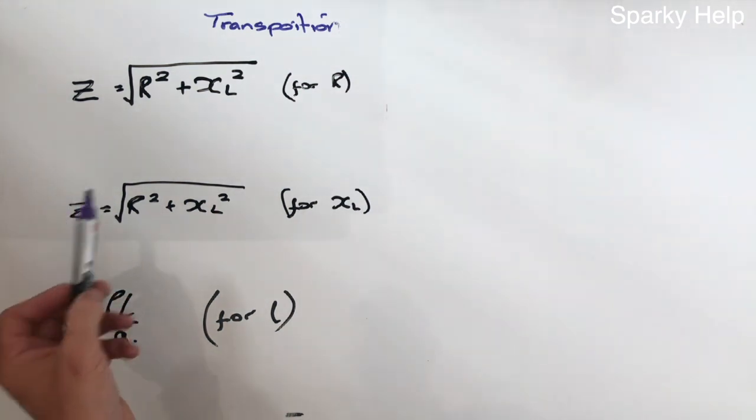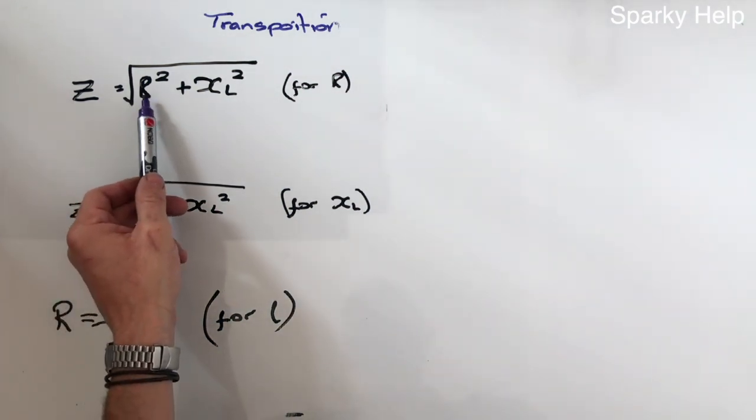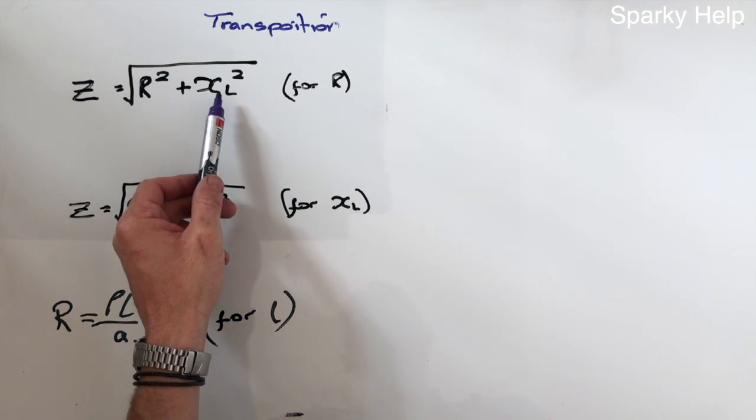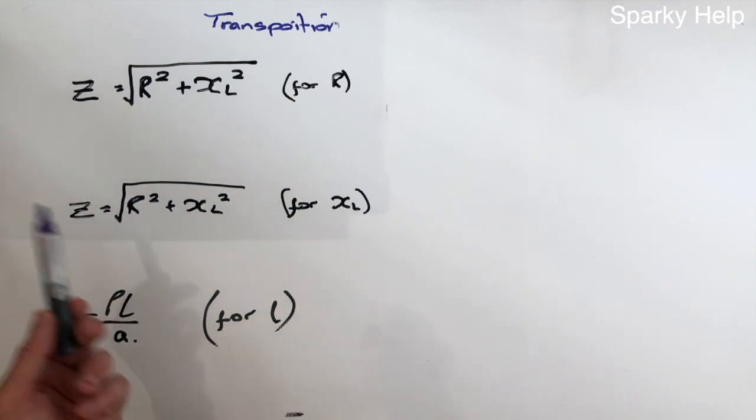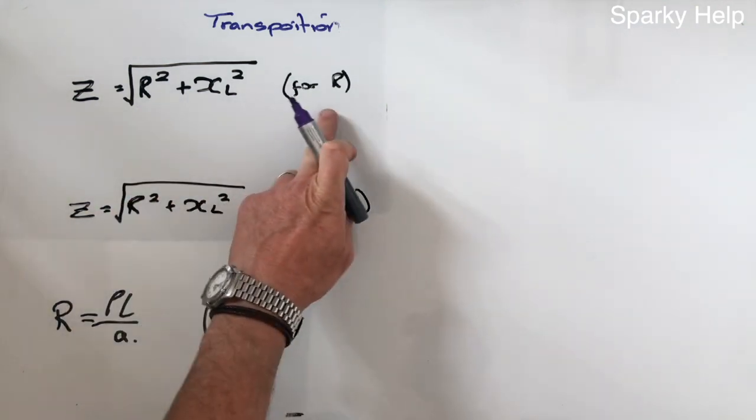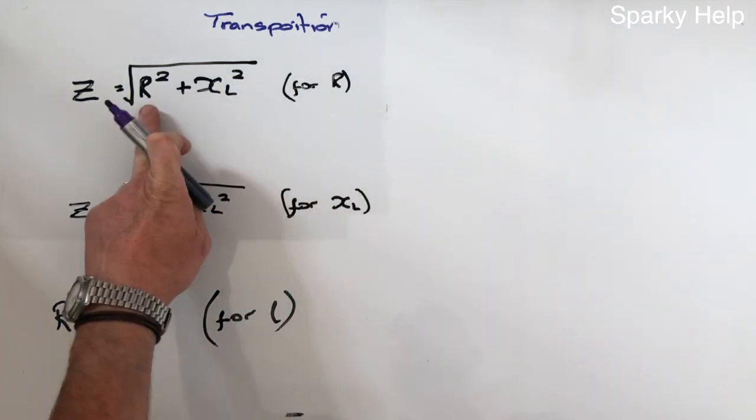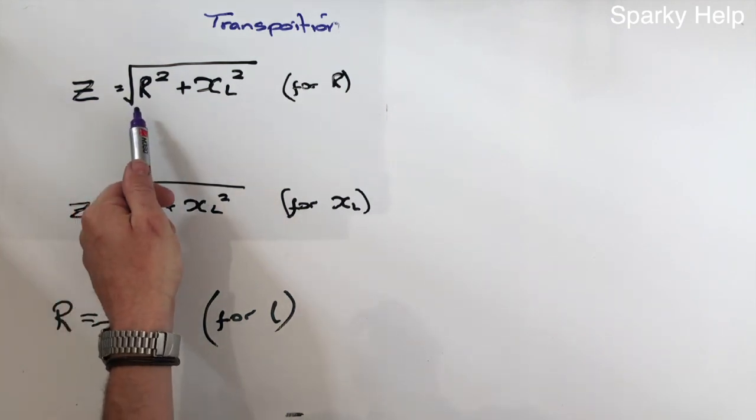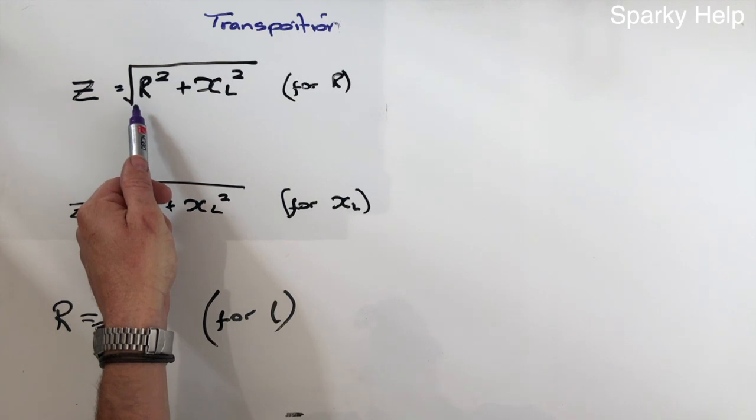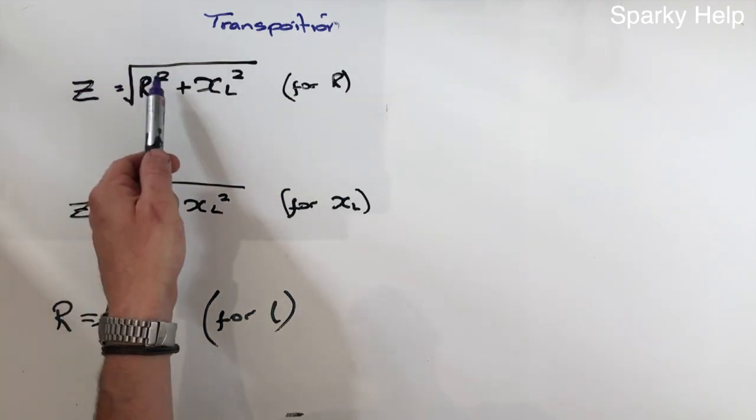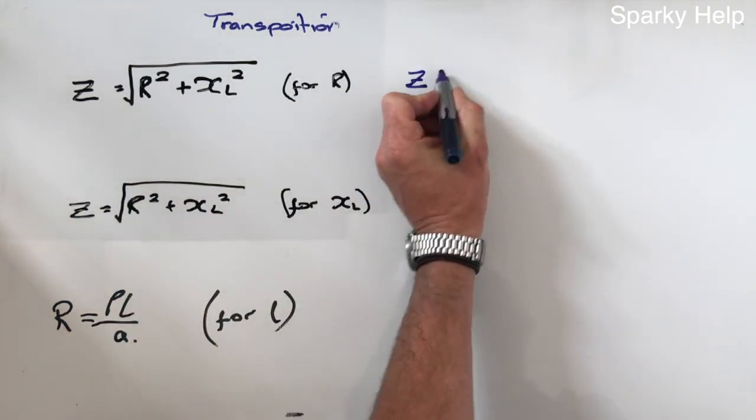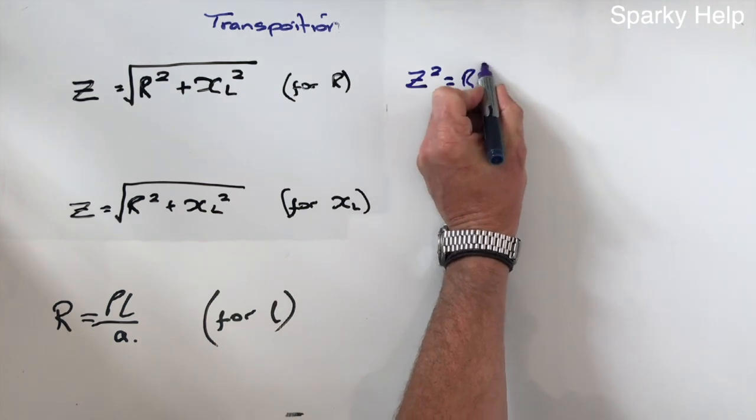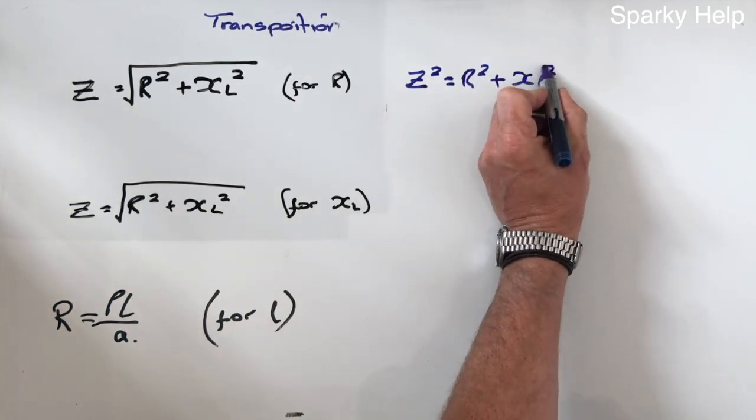Here we have three other formulas. Z is equal to the square root of R squared plus XL squared. If you remember this, this is actually Pythagoras. These two are the same, both Pythagoras, and this one is a resistivity calculation. We need to transpose these. We want to get to R while we've got a square root, so first thing we need to do is get rid of this square root. The opposite to square root is a square, so to get rid of this we square both sides. That will cancel out this square, so what you're left with is Z squared is equal to R squared plus XL squared.